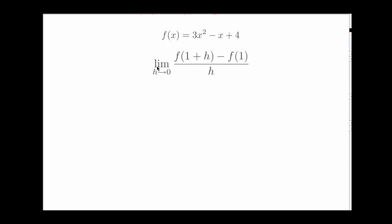This involves a limit and a difference quotient at the same time. Here we're going to take the limit of f(1+h) minus f(1) over h as h goes to 0, where f is this polynomial function 3x² - x + 4.